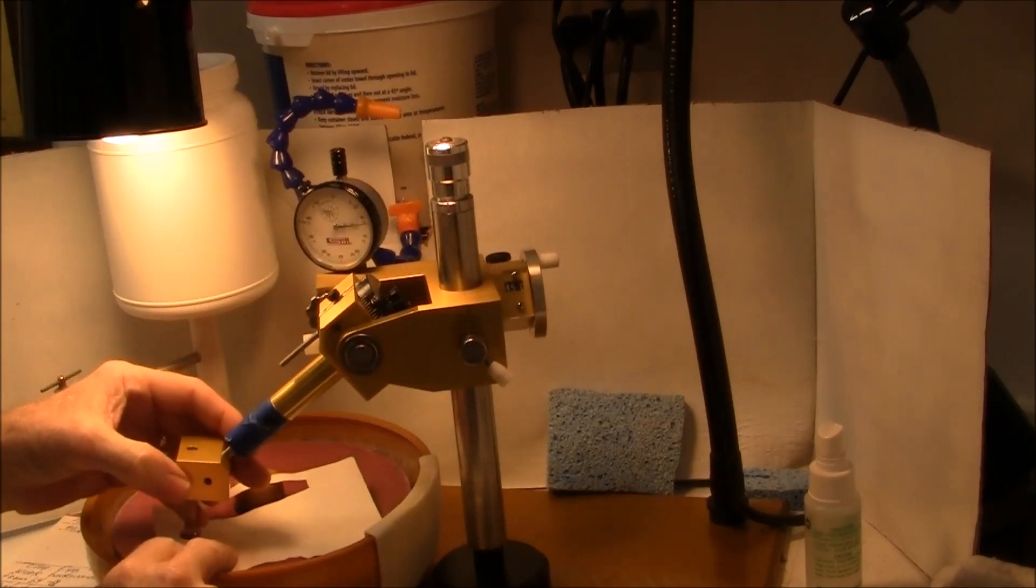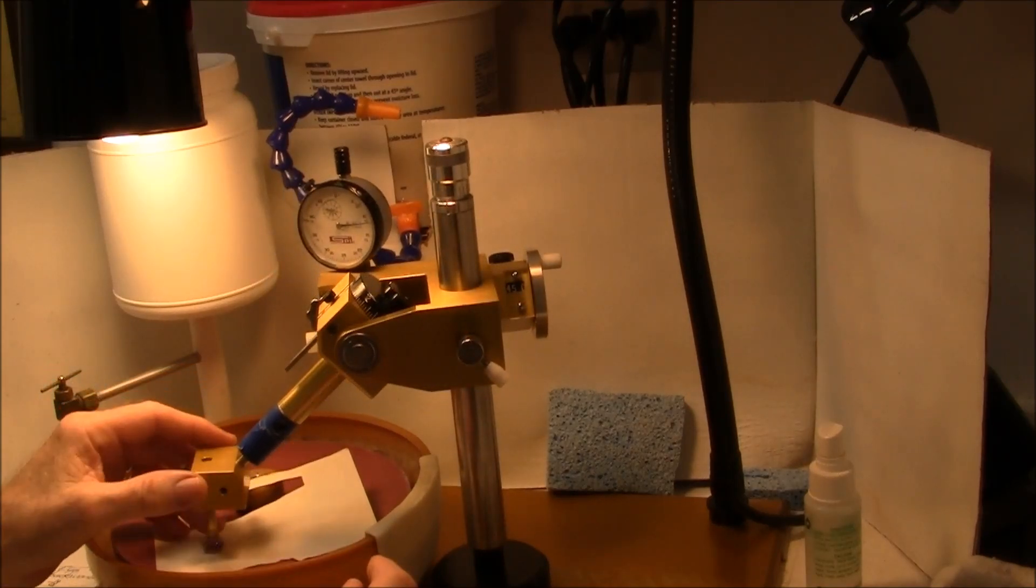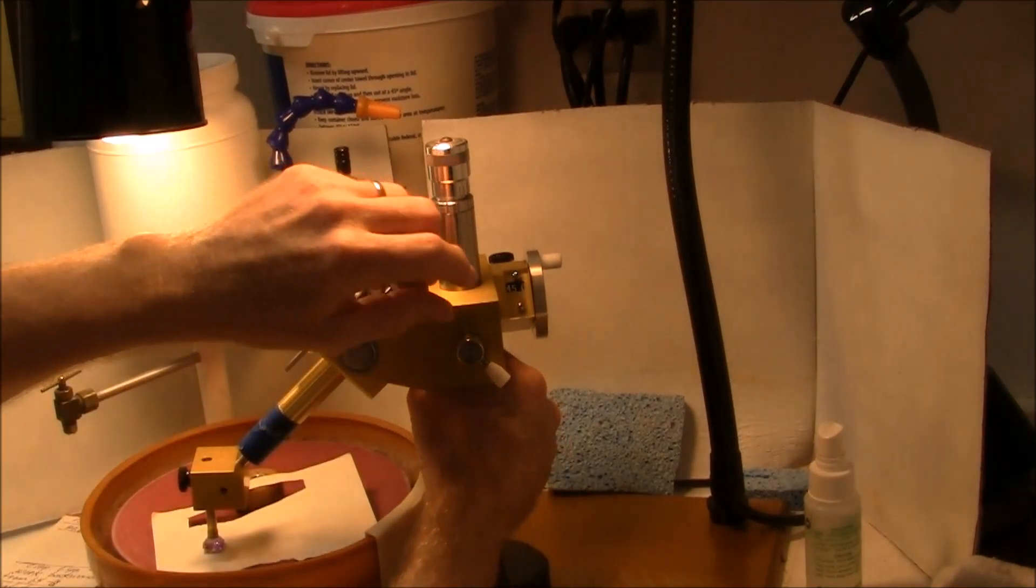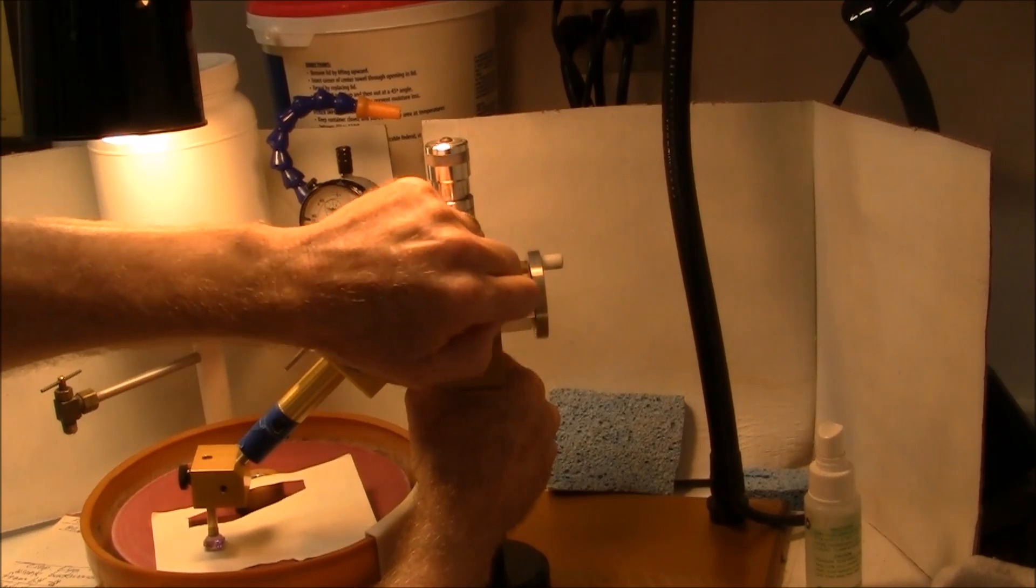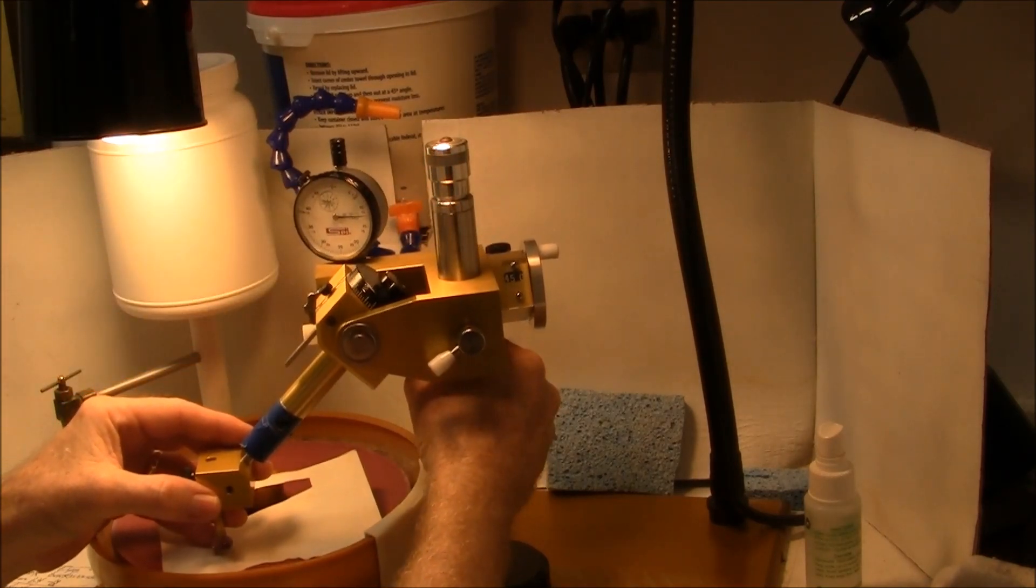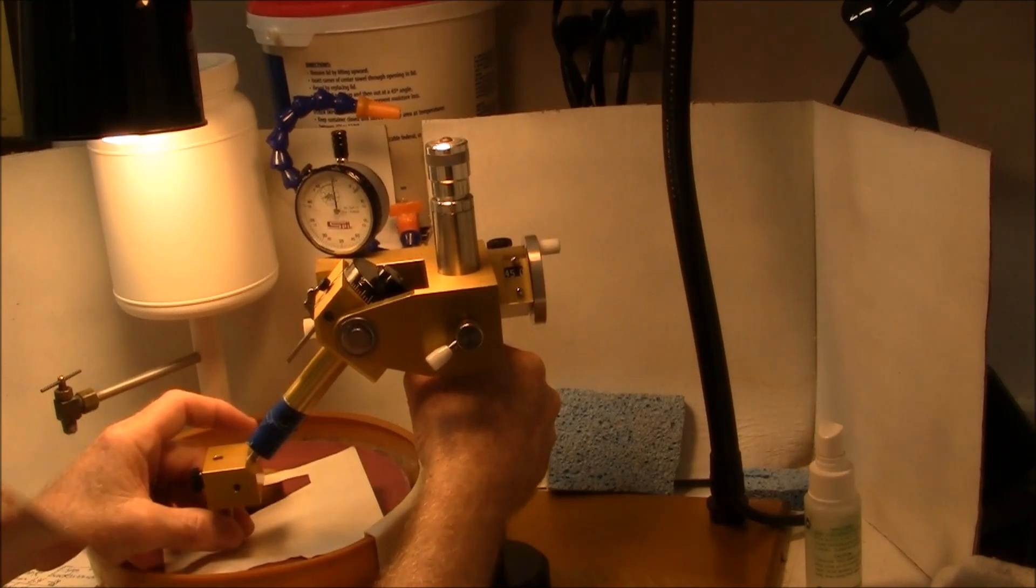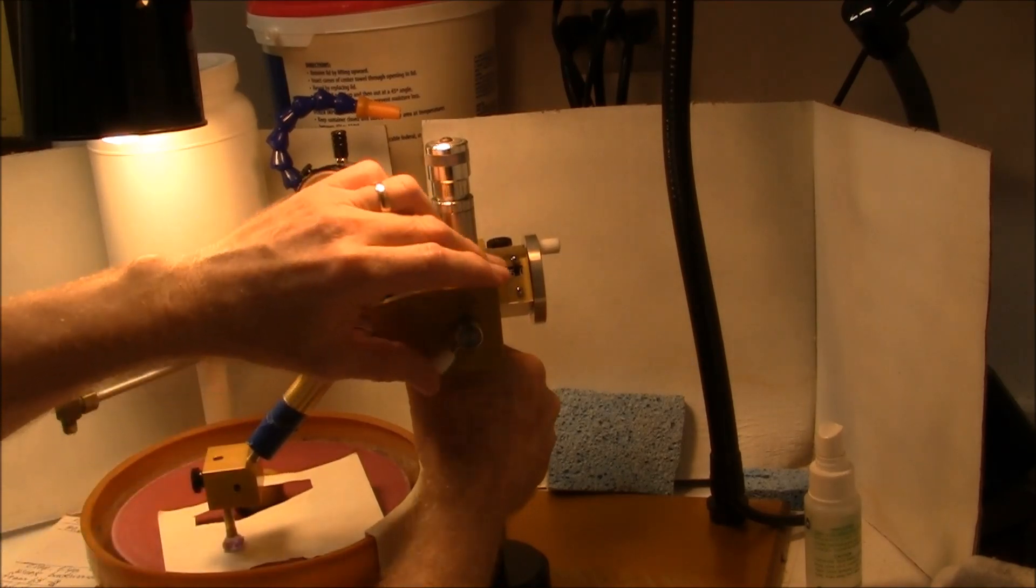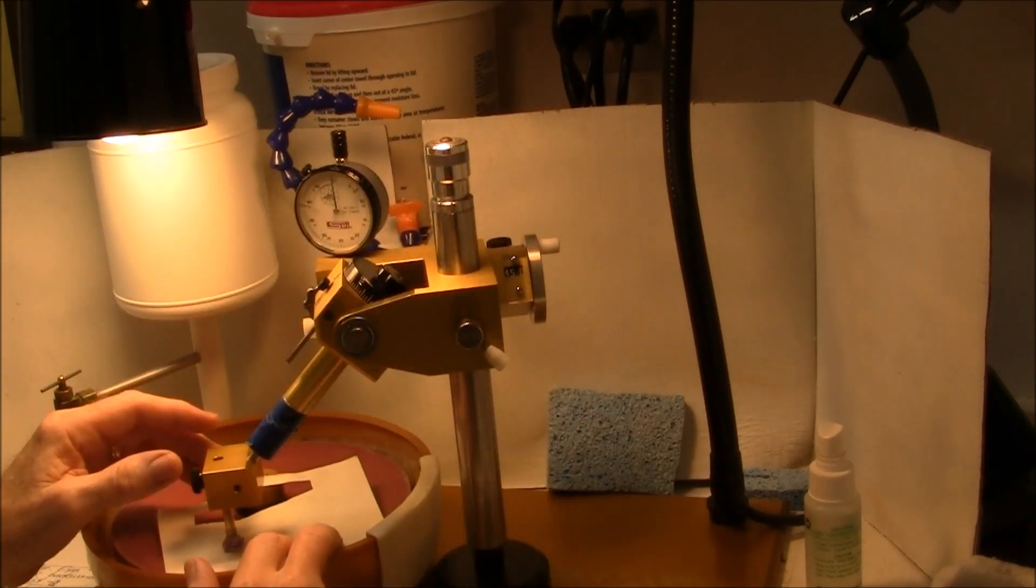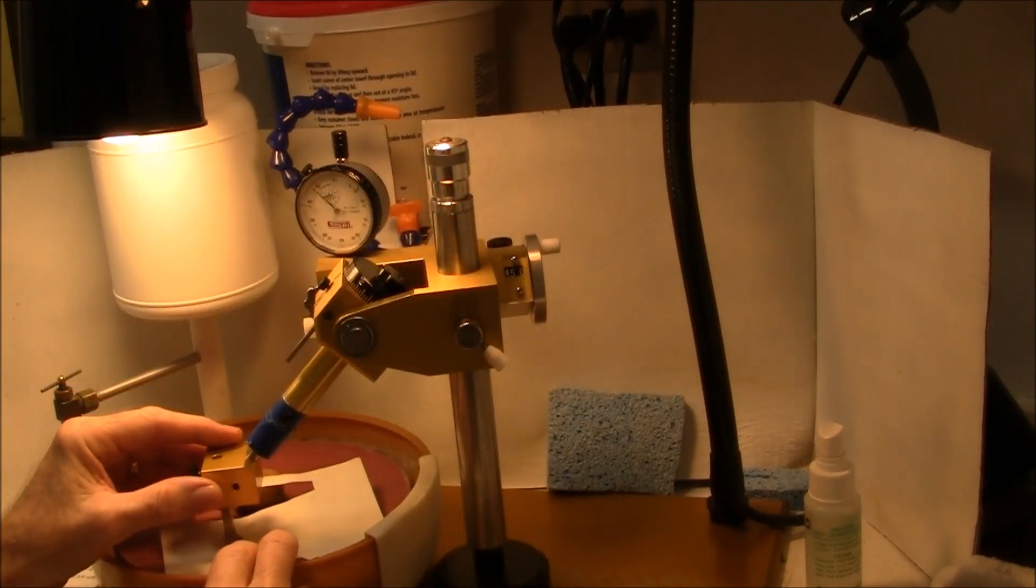Now, I've got to get the height right. This is how I adjust a facetron. I support the head. Loosen the locking lever. Raise it with my hand. Now, I can lock.